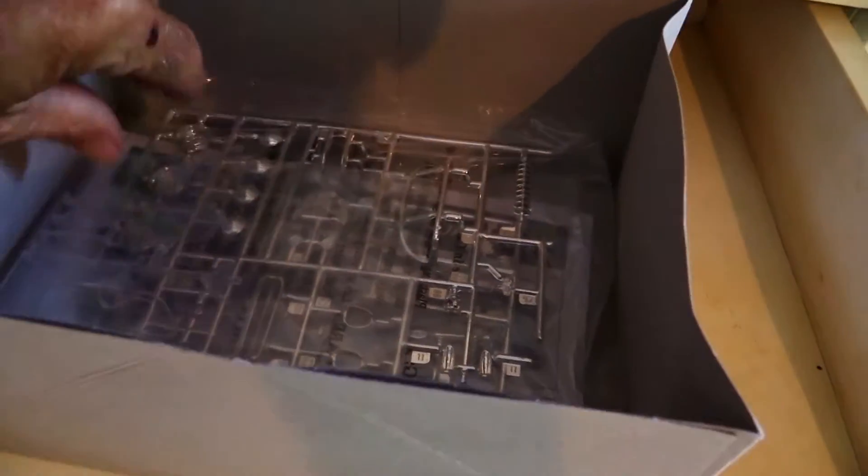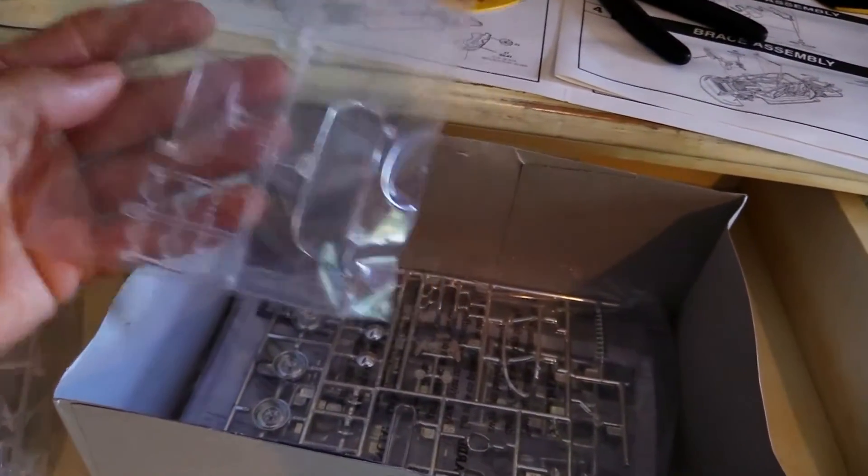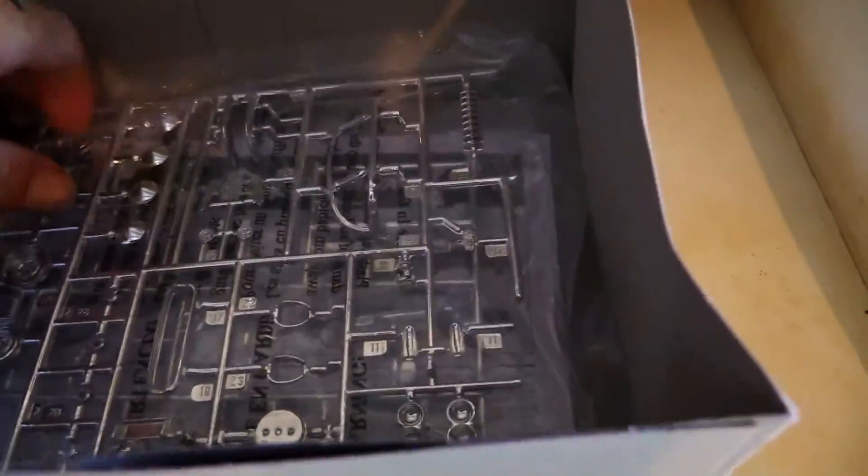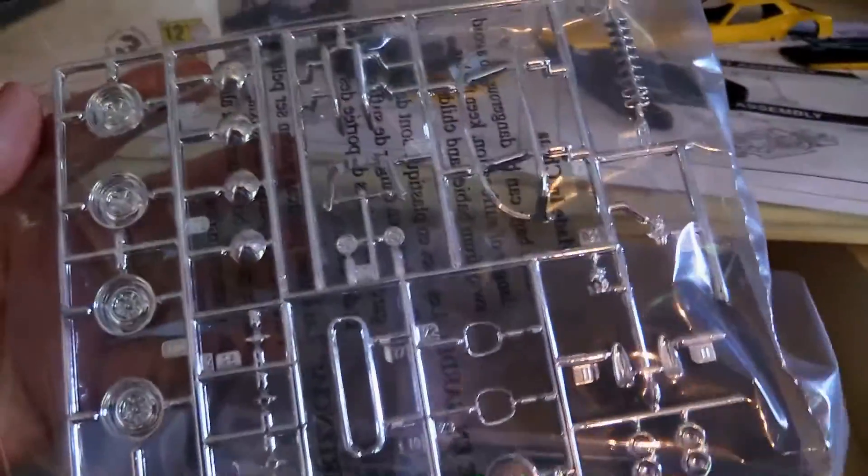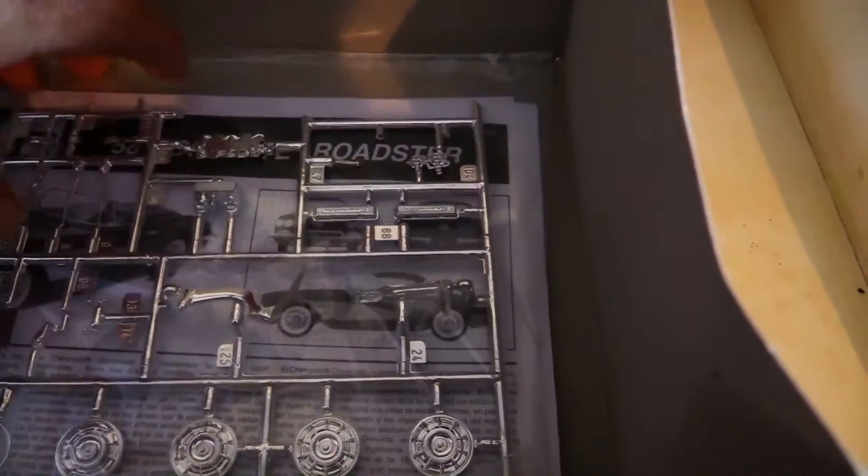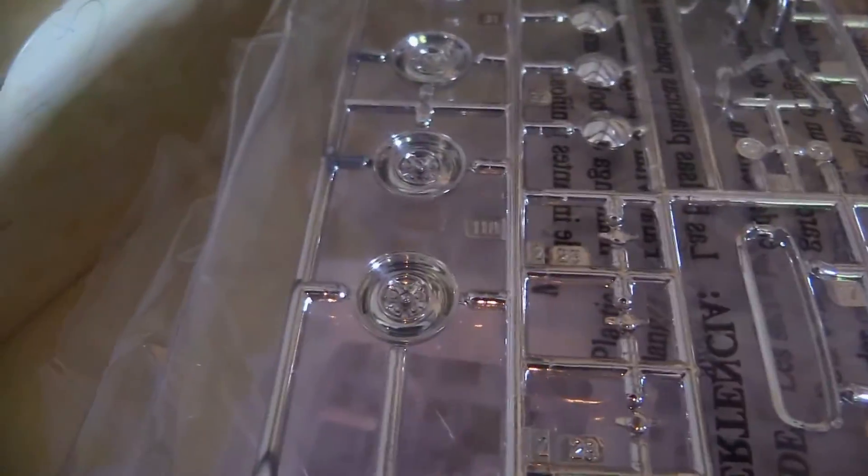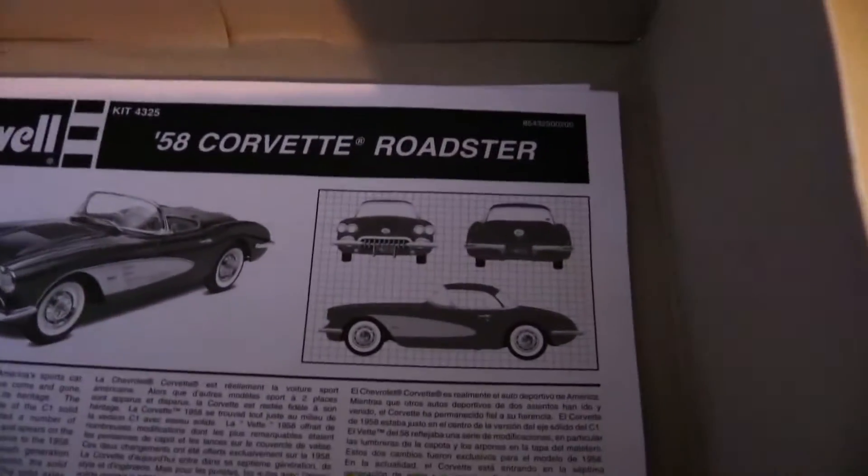I'm going to open that in a moment, and the body's in there. And then you've got the clear parts. Not many. And the chrome tree, which we've got a lot of parts on there. And I'll get in there closer in a minute. And then the second chrome tree, and the other wheels are hubcaps. And then there's the instructions. And that's it for the box.